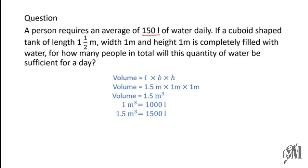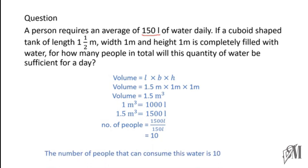The capacity of the tank is 1500 liters. We know one person needs 150 liters, so to find the number of people, divide 1500 liters by 150 liters. 1500 ÷ 150 = 10. Therefore, the number of people that can consume this water is 10.